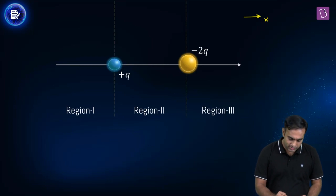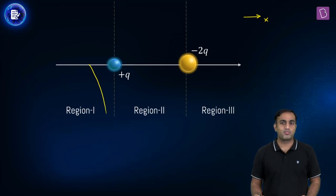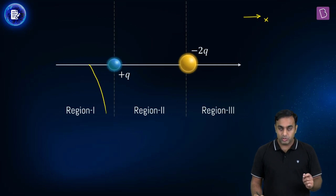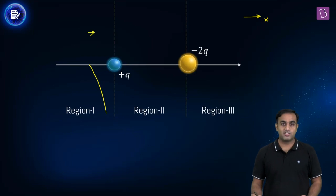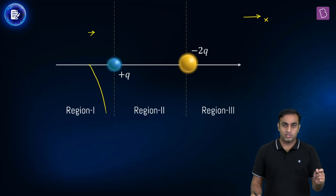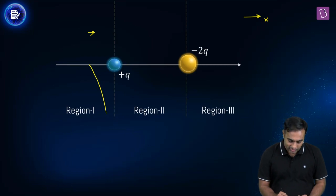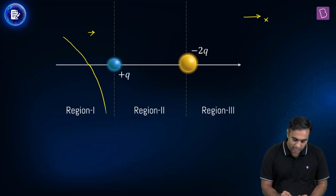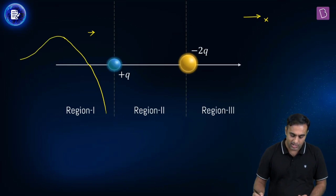Beyond that zero point, the field due to minus 2Q takes over. The electric field grows in the opposite direction, reaches a maximum value, and then falls off to become zero at infinity.